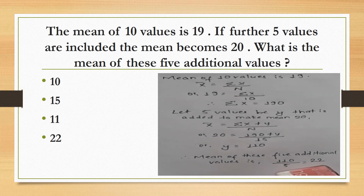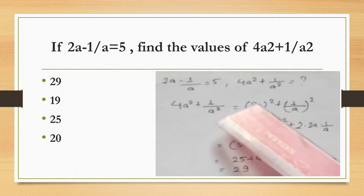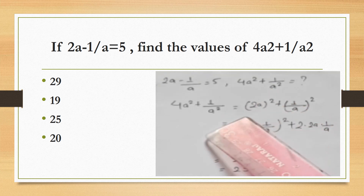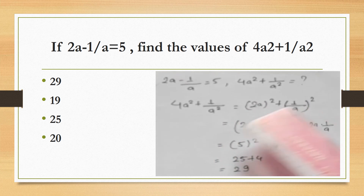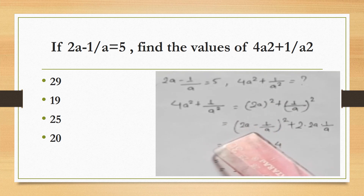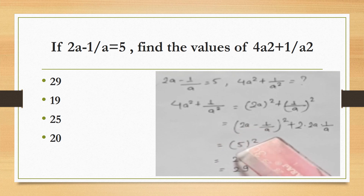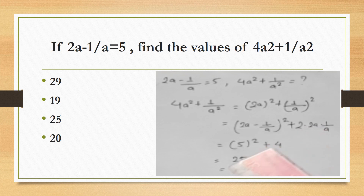If 2a minus 1 by a equals 5, find the value of 4a squared plus 1 by a squared. So 4a squared plus 1 by a squared is (2a minus 1/a) whole squared plus 2 times 2a times 1/a. Using the identity a minus b whole squared plus 2ab, and substituting 2a minus 1/a equals 5, we get 5 squared plus 4, which gives 29.